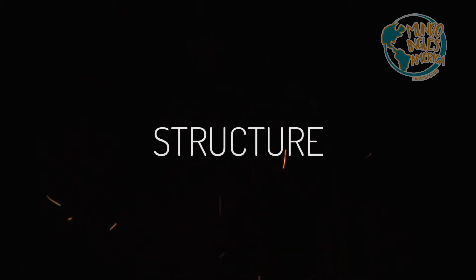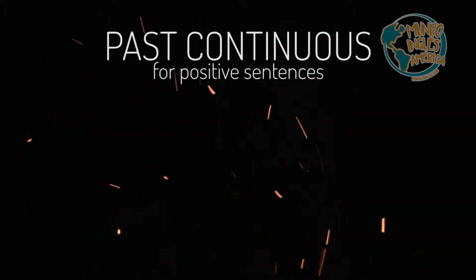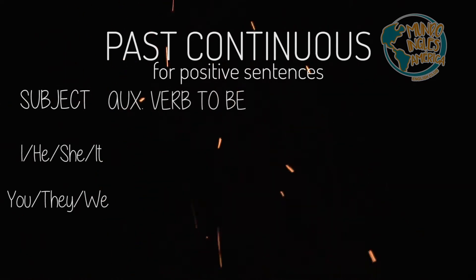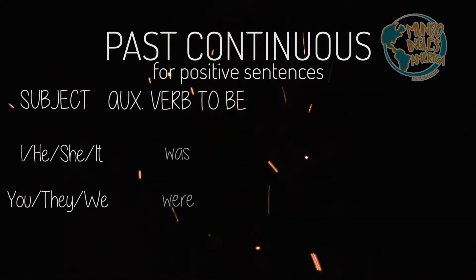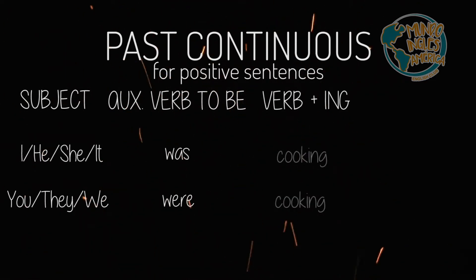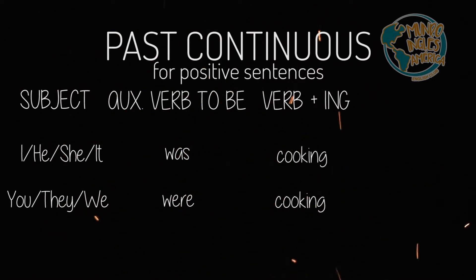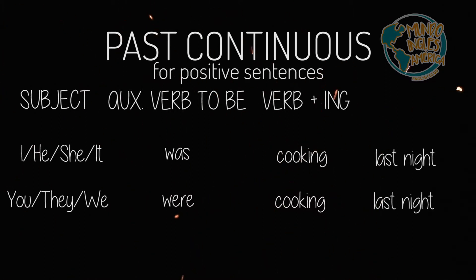Structure. We form the positive form by using our subjects, the auxiliary verb to be, plus the verb plus -ing, also known as the present participle. It results in sentences such as: he was cooking last night, or we were cooking last night.